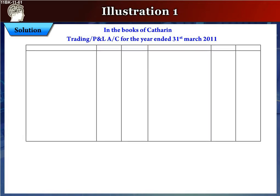We then divide the page into two halves and make three columns on each side, with a particulars column and two amount in rupees columns. On the top left side of this account we write debit, and on the top right side we write credit.